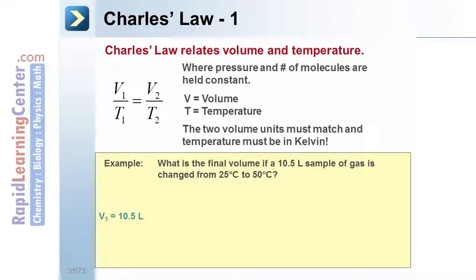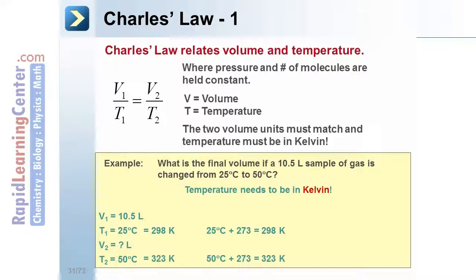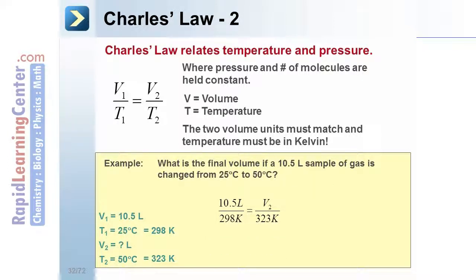The initial volume is 10.5 liters. The initial temperature is 25 degrees Celsius. We're looking for the final volume if the final temperature is 50 degrees Celsius. Convert the Celsius to Kelvin by adding 273. Plug the known quantities into the equation and use algebra to solve for the unknown quantities. Calculate the answer as 11.4 liters.